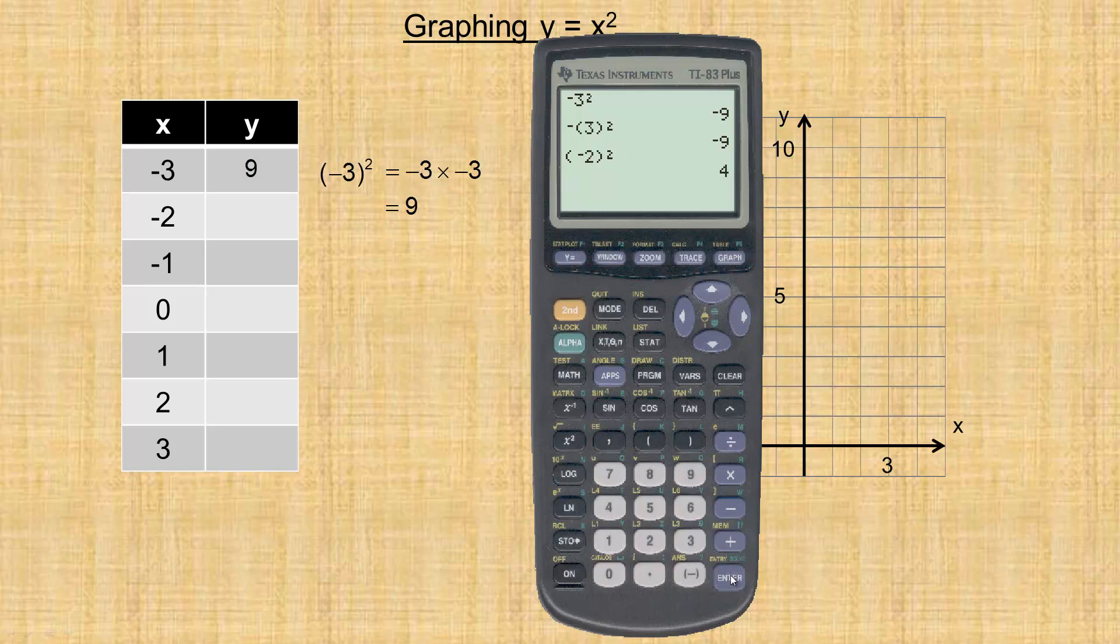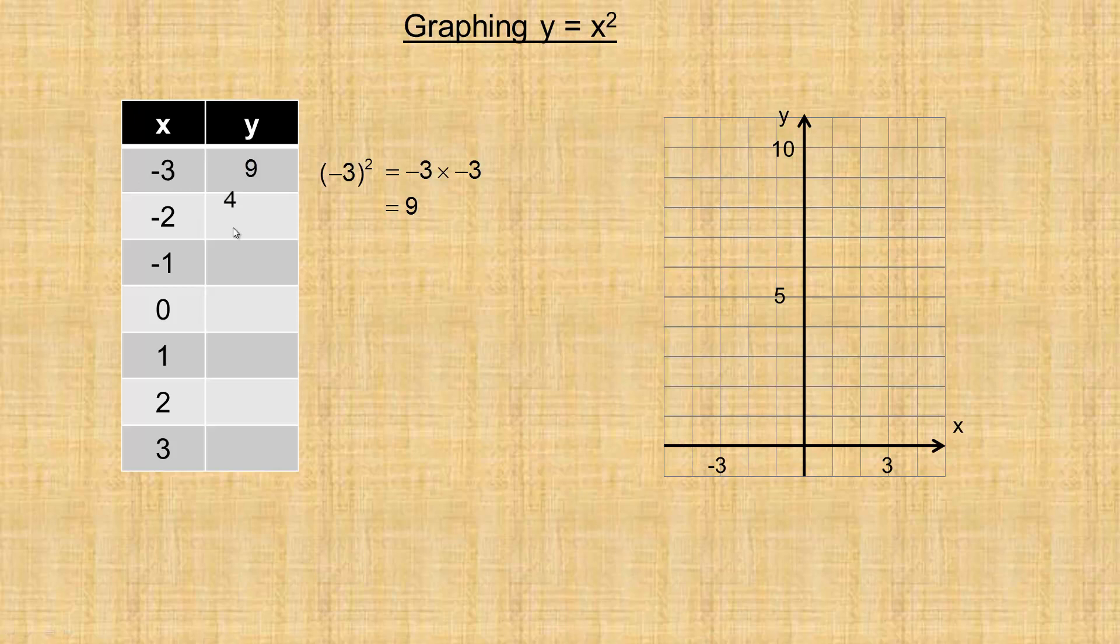So negative 2 squared is 4, so this is going to be a 4 here. Negative 1 times negative 1 is 1. Now I don't have any more negatives in the base. So 0 squared is 0, 1 times 1 is 1, 2 times 2 is 4.